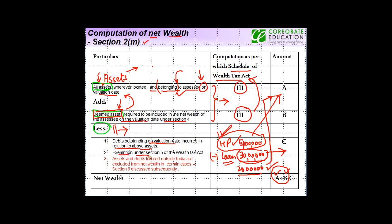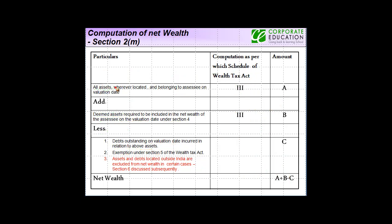Exemption under Section 5 of the Wealth Tax Act — there are certain exemptions which we will discuss. Assets and debts located outside India are excluded from net wealth in certain cases, which we will be seeing in the subsequent slides. So in a nutshell, you take all the assets, add all the deemed assets, and from that subtract all the debts outstanding, the exemptions granted to you, and assets and debts located outside India. After reducing all these three, you will get the net wealth.